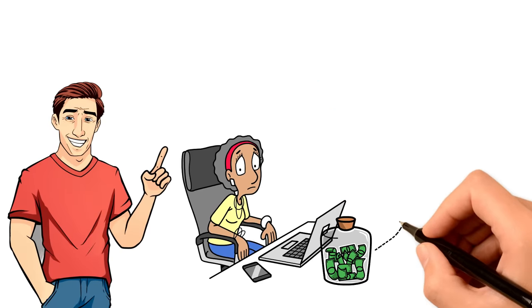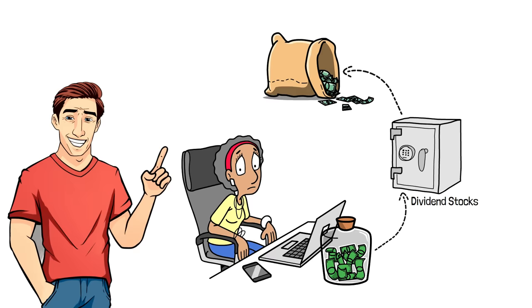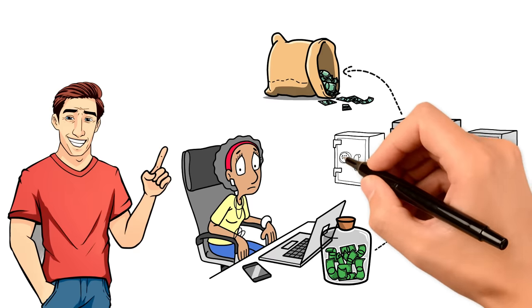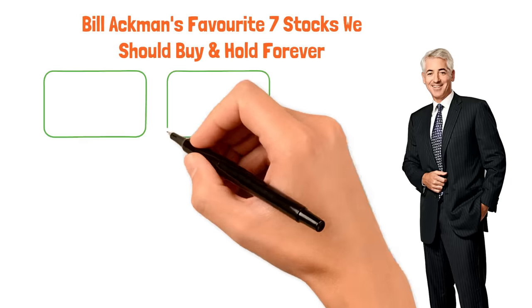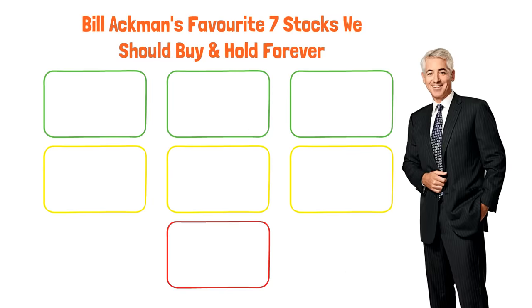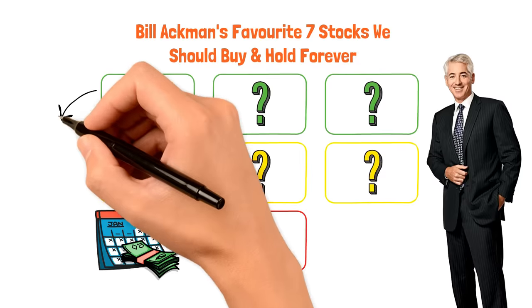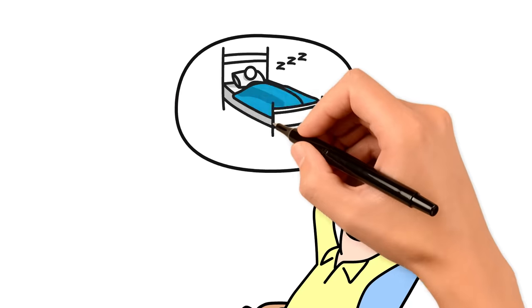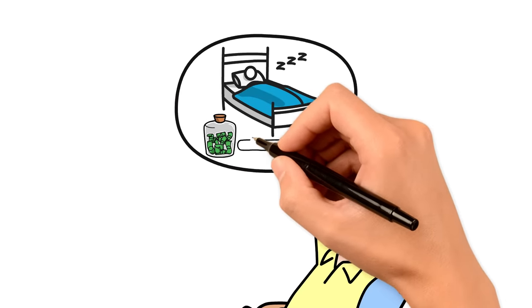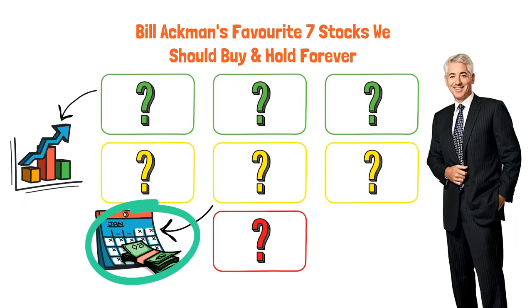Finding ways to become financially free in this day and age is easier than ever with dividend stocks. But with so many options, which ones truly deserve a spot in your portfolio? We're looking at Bill Ackman, a big name in investing, and his favorite seven stocks that he thinks we should buy and hold forever. These aren't just any stocks. They're ones that pay you back regularly and have the potential to grow over time. So if you're dreaming of making money in your sleep and securing your financial future, you're in the right place. Let's get started and see how these special stocks can help you build a steady income for years to come.